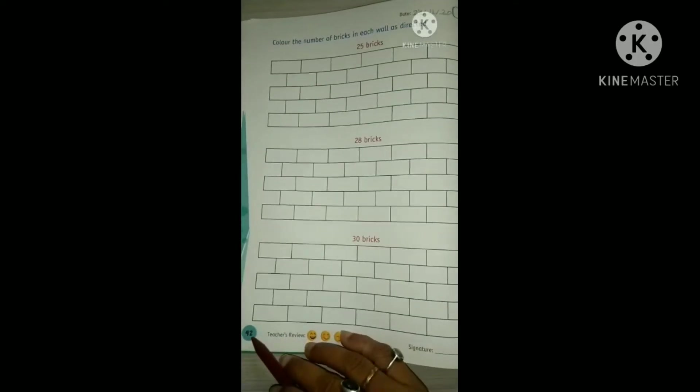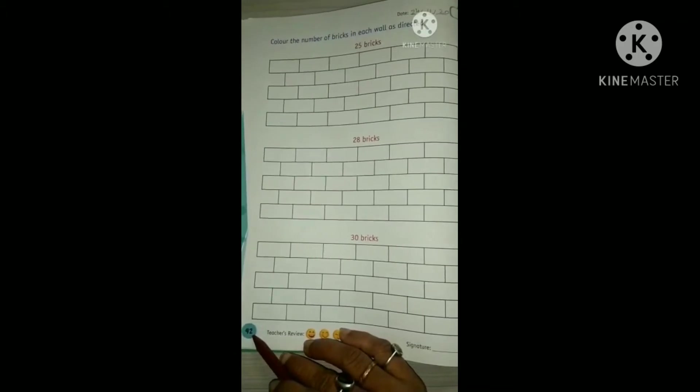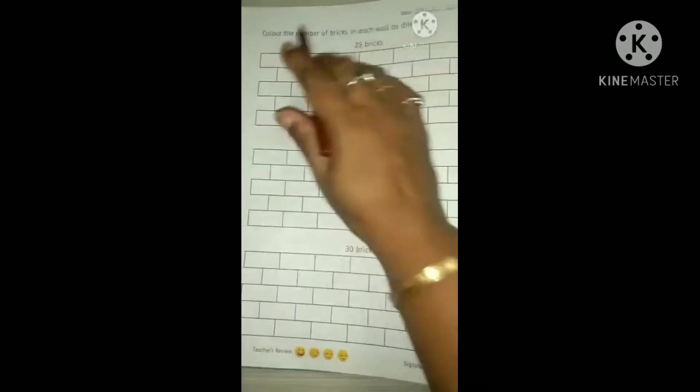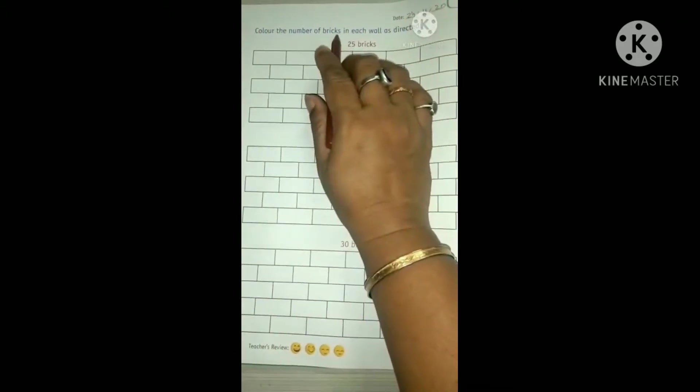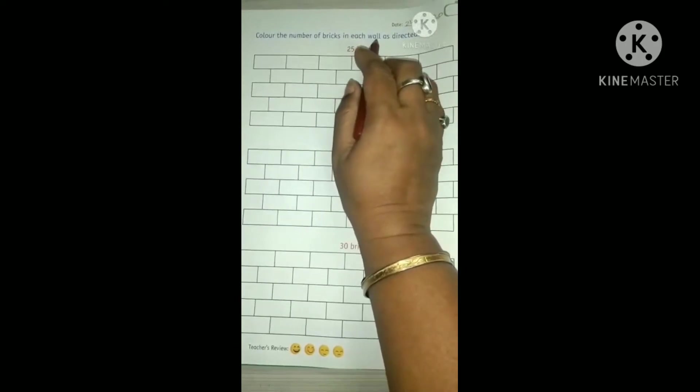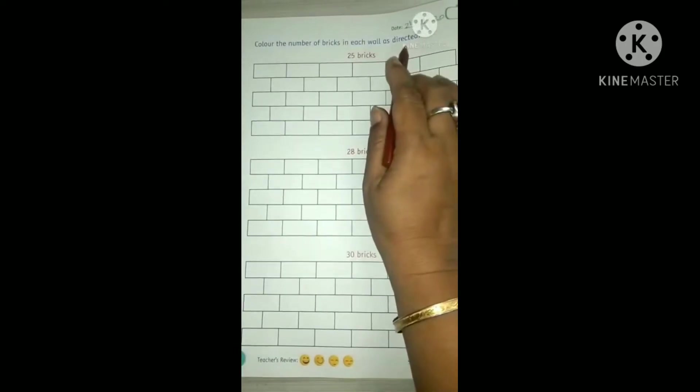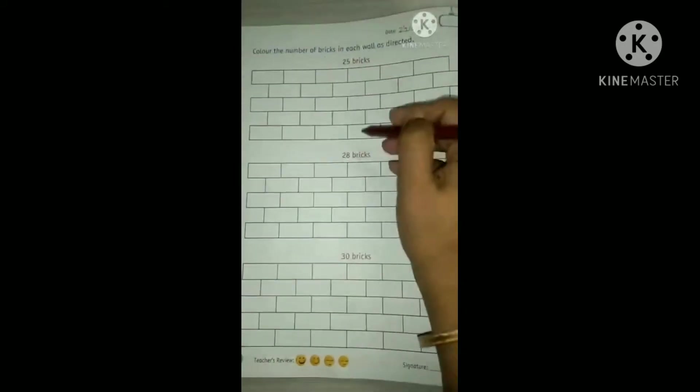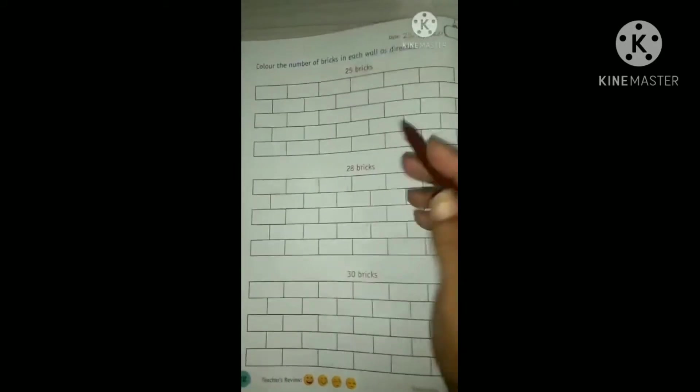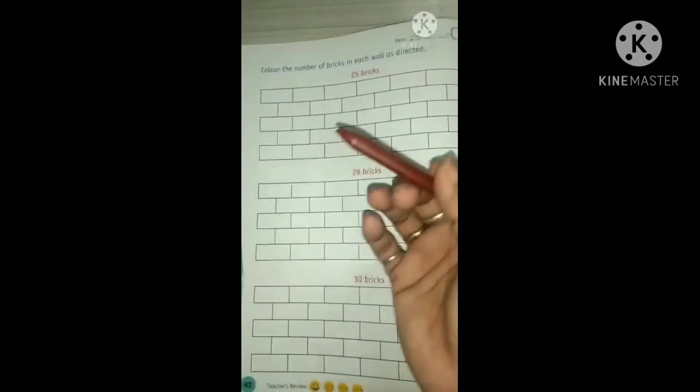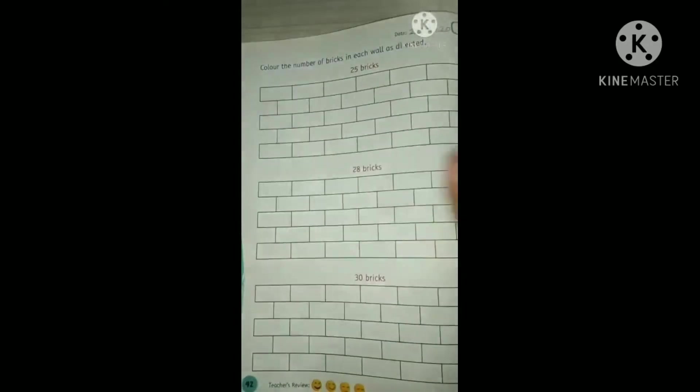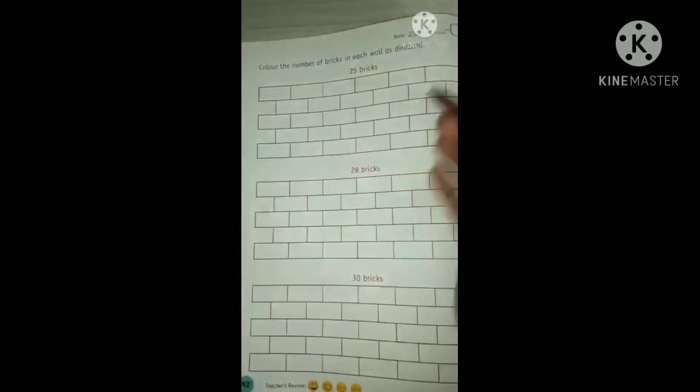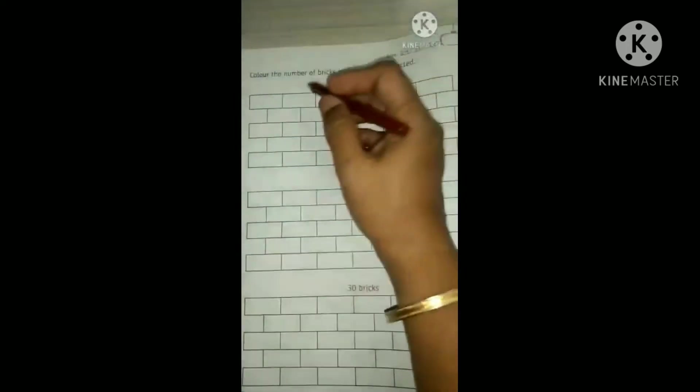On page number 42, color the number of bricks in each wall as directed. Now, 25 bricks. We have to color only 25 bricks. So I am using this brown color. You can use anyone, whichever you like - red, blue, green, whatever, okay?